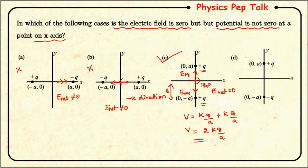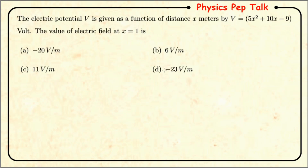Also looking at option D, it also constitutes a dipole arrangement. If you consider any point, there will be a net electric field that is not equal to zero. Therefore option D is also a wrong answer.